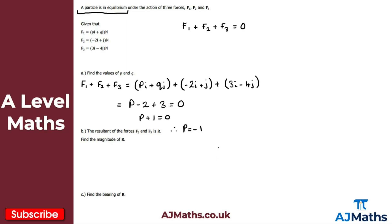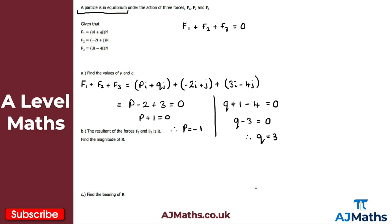Now for the j component to find Q: Q plus 1 minus 4 equals zero. Since 1 minus 4 is minus 3, we get Q minus 3 equals zero, so Q equals positive 3. That's our solution to part A, giving us P equals minus 1 and Q equals 3.